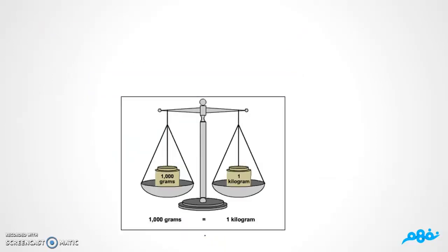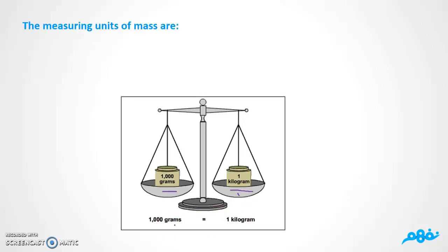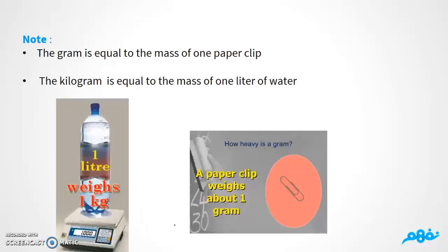We have a balance and two units: grams and kilograms. You already know that one kilogram equals one thousand grams. The measuring units of mass are gram and kilogram, so we use gram and kilogram to measure the mass.